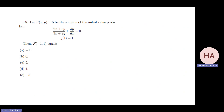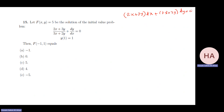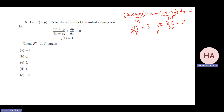Now let's calculate f(x,y) for the exact equation. We rewrite as (2x+3y)dx + (3x+2y)dy = 0. Here M = 2x+3y and N = 3x+2y. Checking exactness: ∂M/∂y = 3 and ∂N/∂x = 3. They are equal, so it's exact.